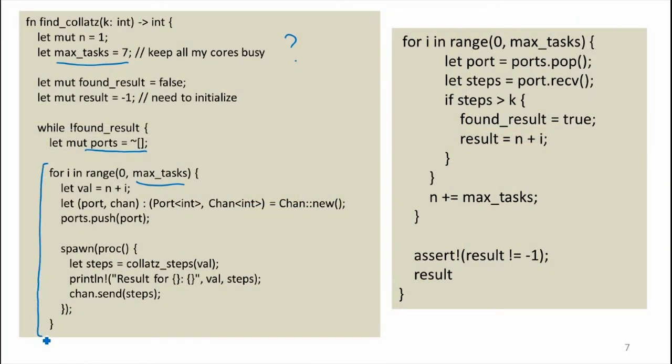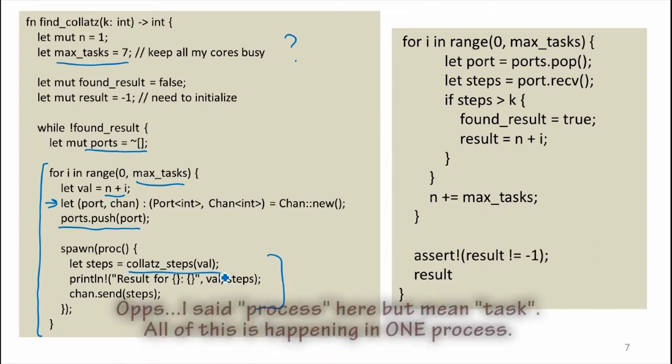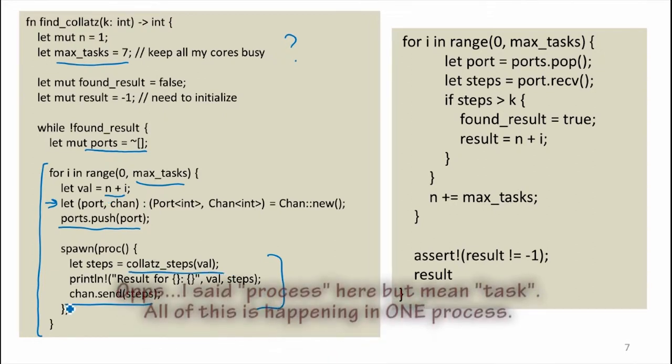And then I'm going through this loop. For each task, I'm creating a new channel, I'm keeping track of the port, and then I'm spawning a process that calls collatz_steps for that val. So I'm calling it for each of the values from n plus 0 up to n plus max_tasks and seeing what the result is. So the new spawn process is calling collatz_steps, and then it's sending that over the channel.